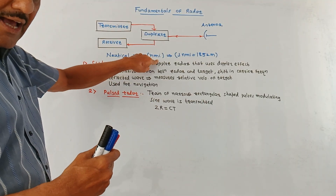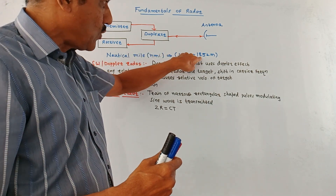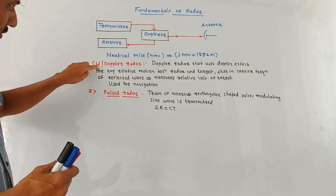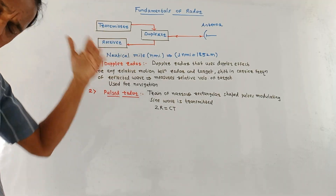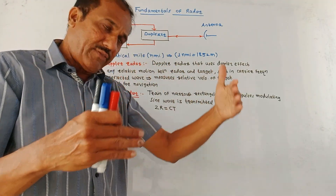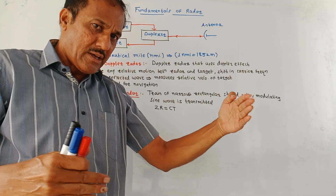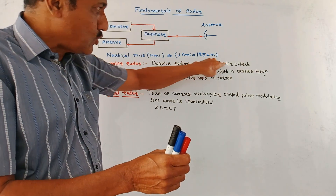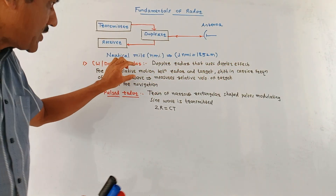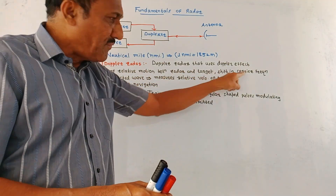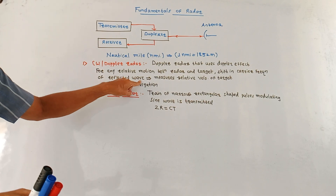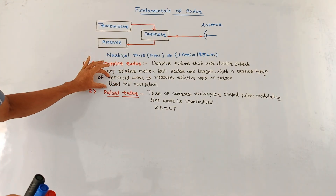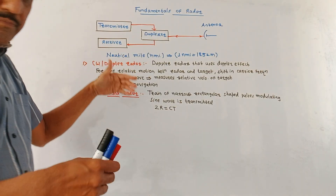The range of a target is measured in nautical miles (NMI), where one nautical mile equals 1852 meters. There are two major types of radars. The first is the continuous wave (CW) or Doppler radar. As the name indicates, it makes use of the Doppler effect. Whenever the target is moving, this type of radar is preferred. For any relative motion between radar and the target, the shift in the carrier frequency of the reflected wave gives the measurement of the relative velocity of the target. It is mainly used for navigation purposes in ships or aeroplanes.